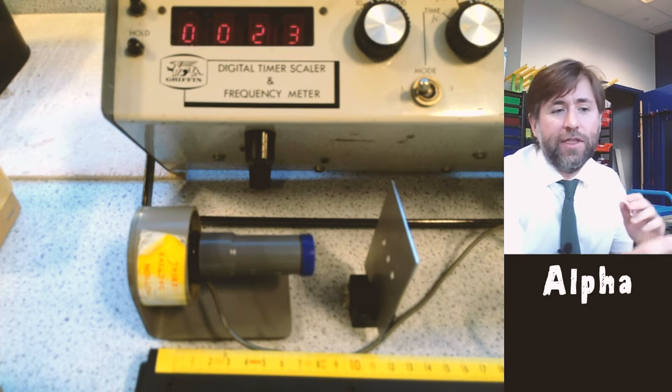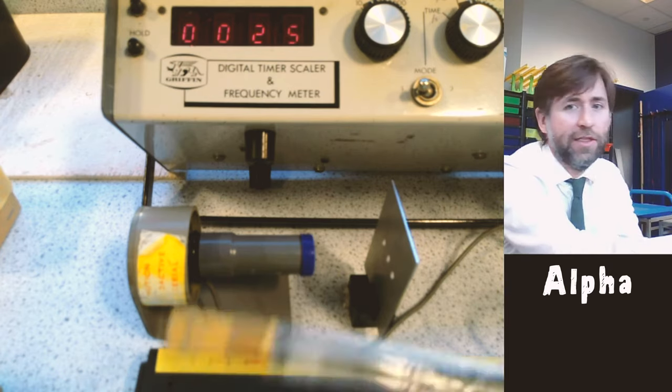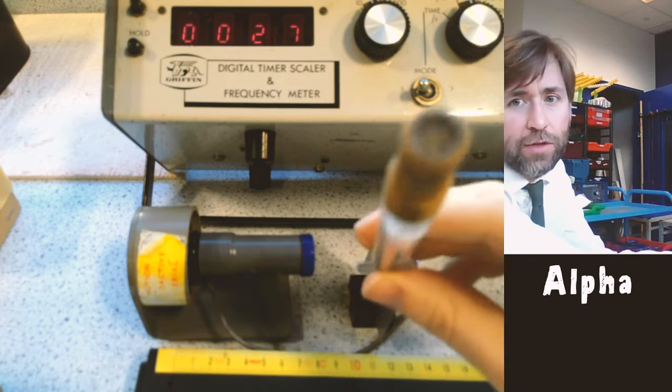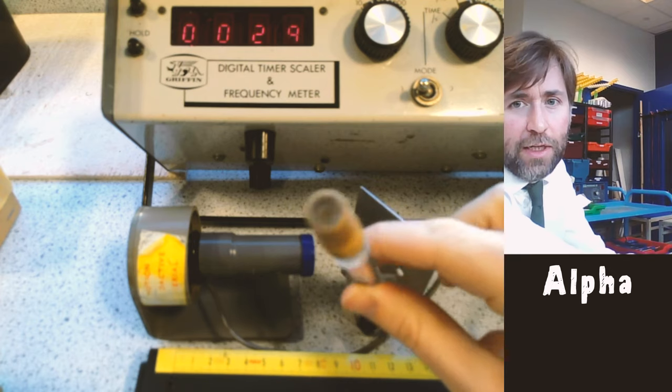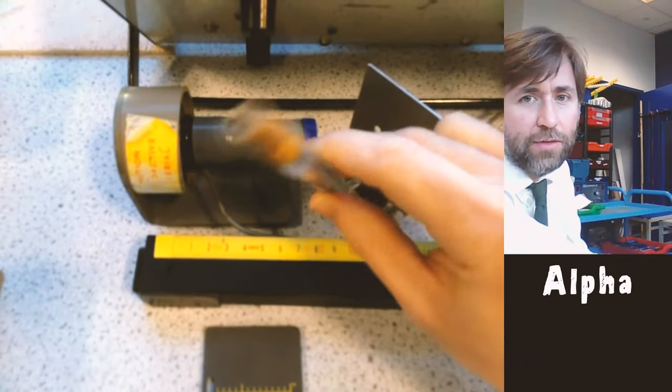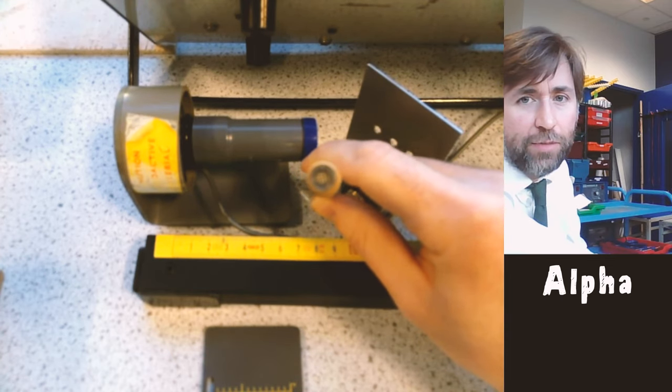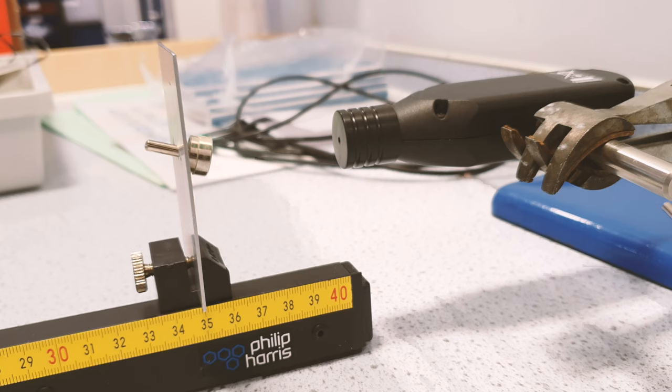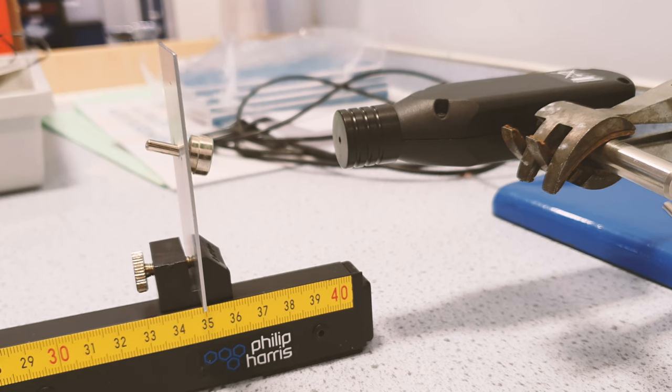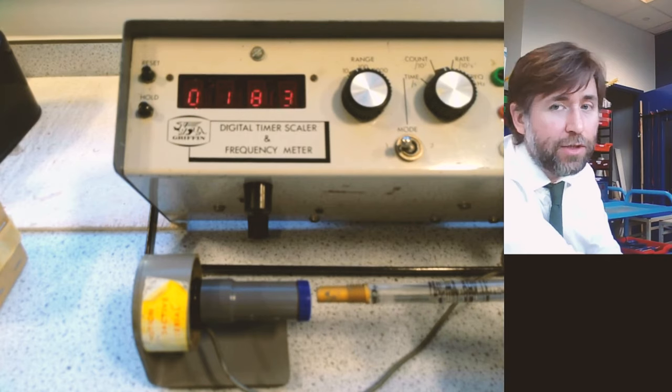So here we go, this is our first source, an americium source, just mounted in a bit of plastic like this. Inside there is just a piece of metal, and that metal is americium. When I put it close enough to the Geiger Muller tube you can see that count is increasing at a very high rate, much higher than background level.